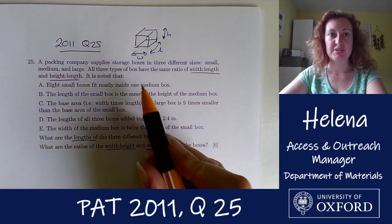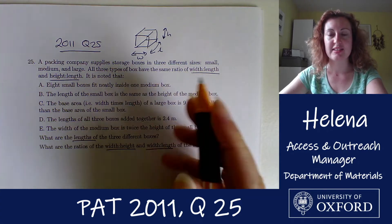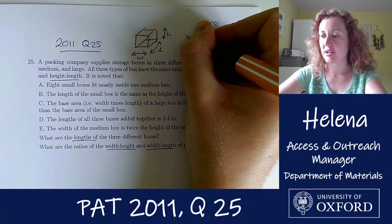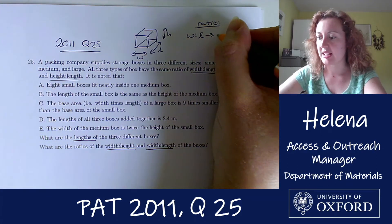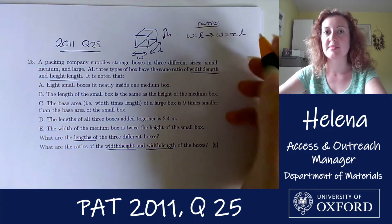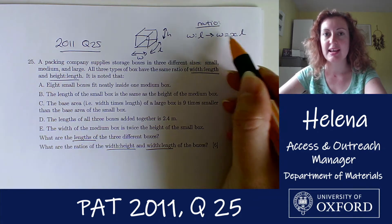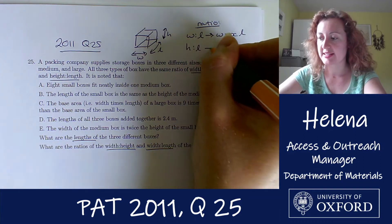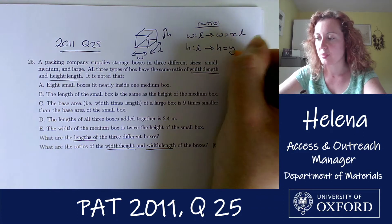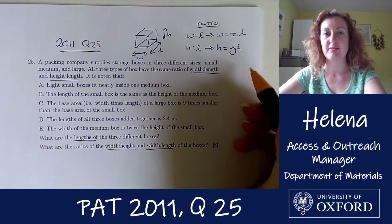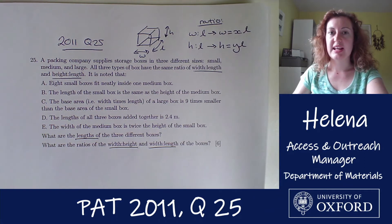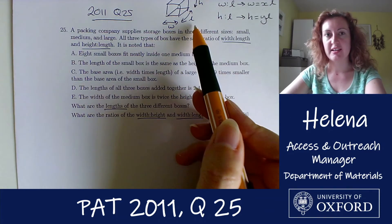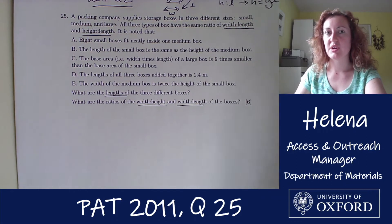We're told that all three boxes have the same ratios of width to length and height to length. I'm going to write these in a mathematical way. The width-to-length ratio can be written as w equals x times l, where x is a constant the same for all three box sizes. Similarly, the height-to-length ratio is h equals y times l, where y is another constant. Now let's set up how we define the different dimensions for each of the different sized boxes.